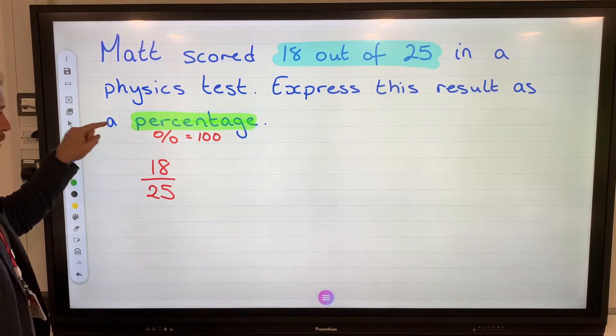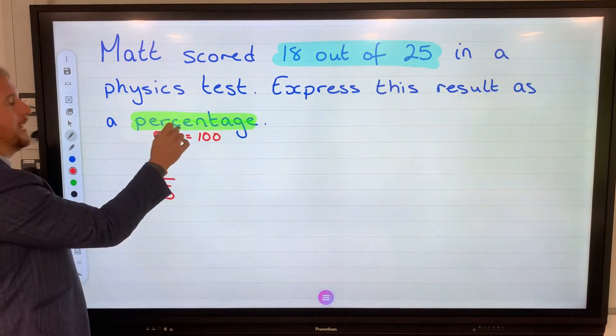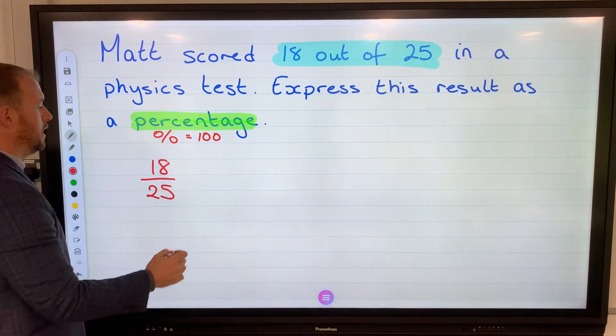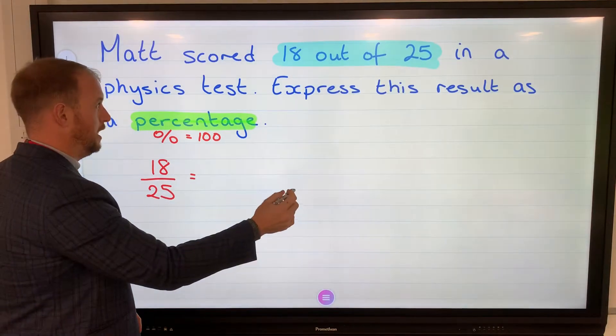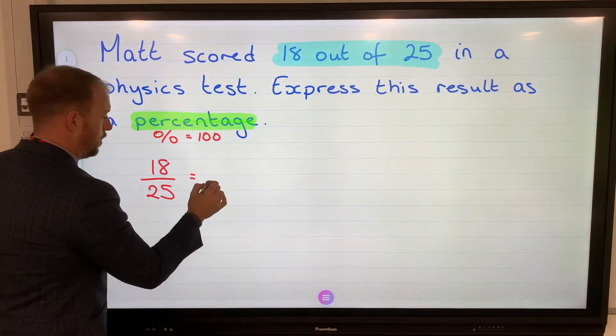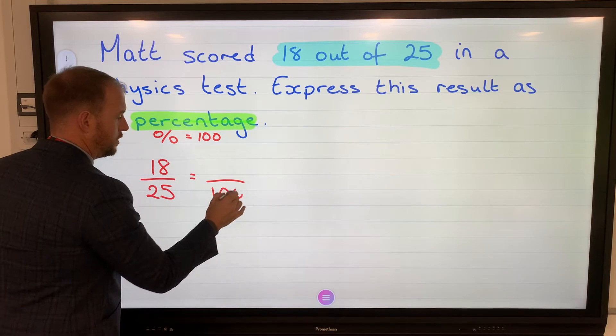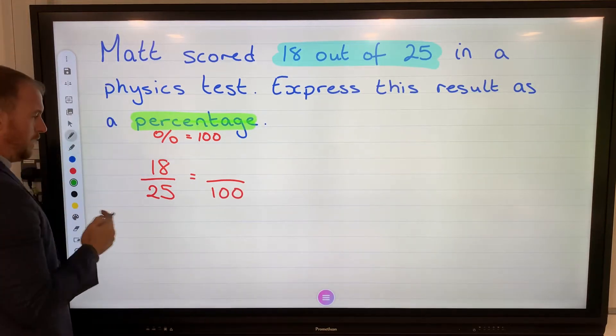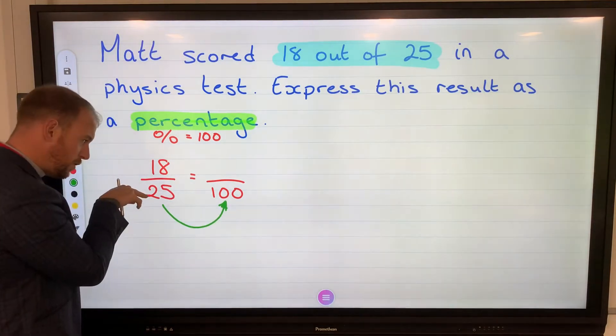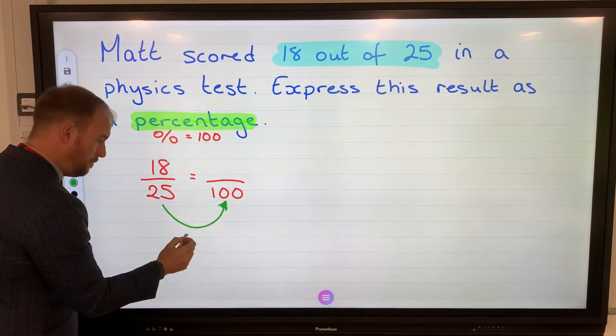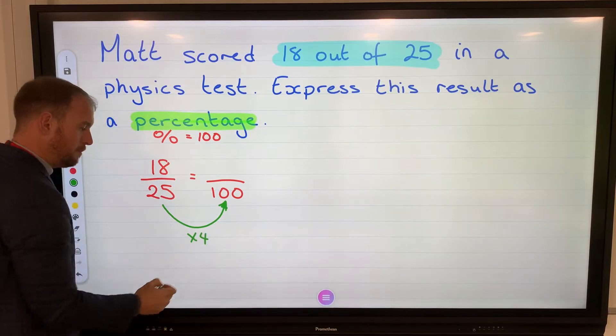Now, 18 out of 25, we can easily make that out of 100. So instead of going directly for the percentage symbol, let's make it out of 100. And the way we do this then is using equivalent fraction methods. What have we done to 25 to make 100? We have multiplied it by 4.